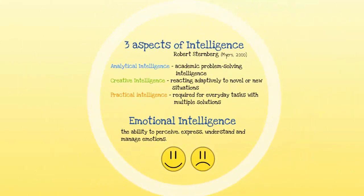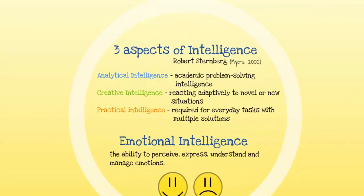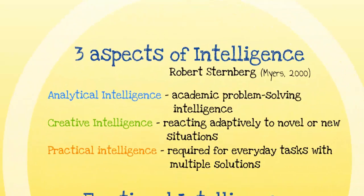Robert Sternberg had another model of intelligence where he identified three aspects: analytical intelligence, which involved academic problem-solving; creative intelligence, which referred to reacting adaptively to novel or new situations; and practical intelligence, which is required for everyday tasks that have multiple solutions.